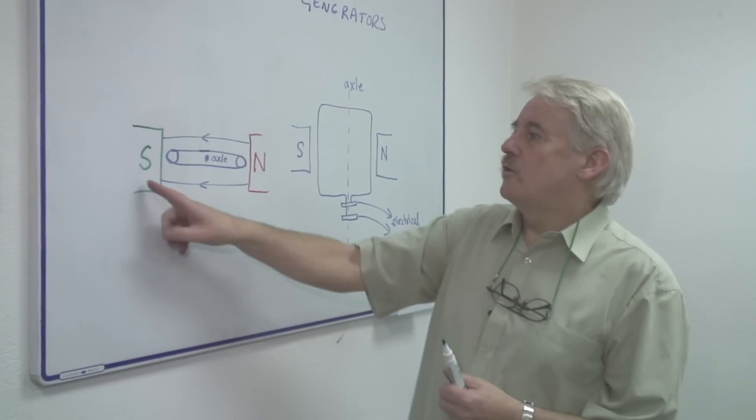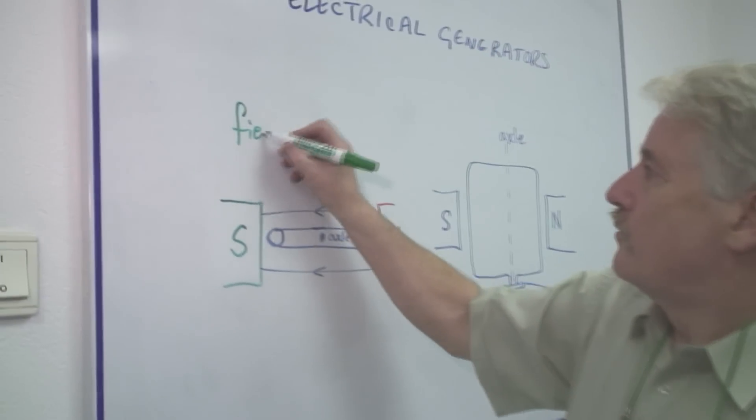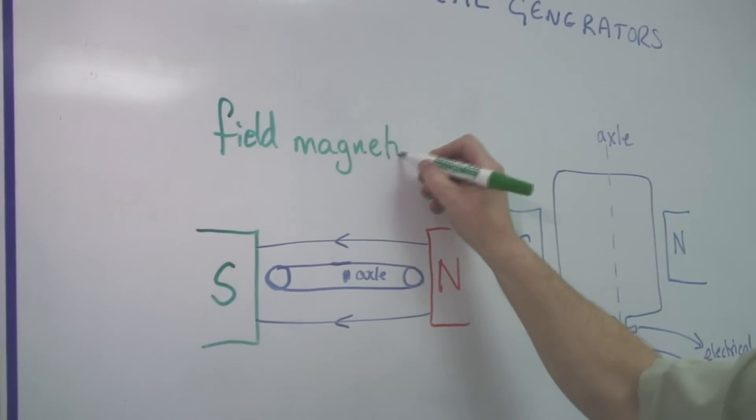First of all, I need what we call field magnets. The reason for these is that I need a magnetic field in the first place.